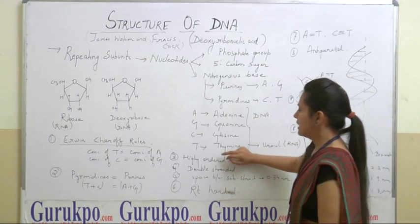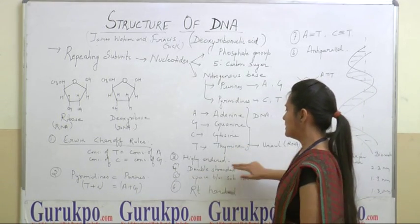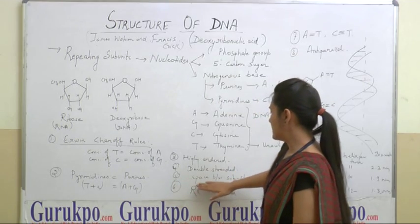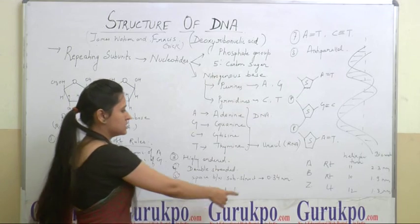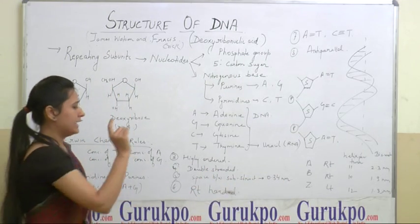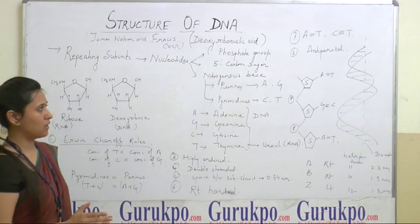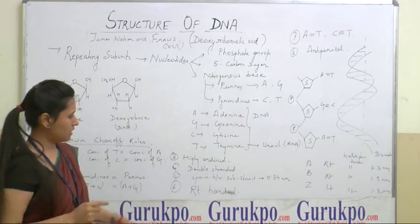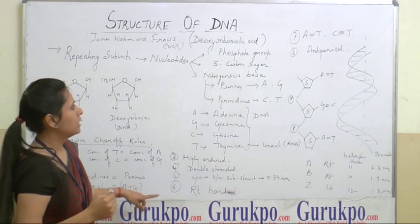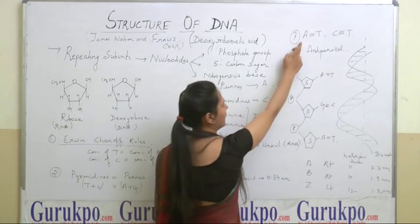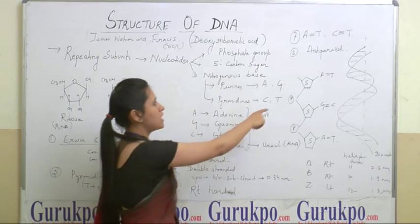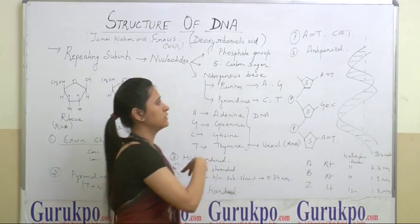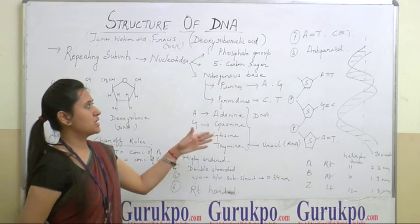DNA is a highly ordered structure. It is double-stranded, that's why we call it a double-stranded helical structure. The space between the sub-structures is 0.34 nanometres. It is a right-handed structure because it spirals along the imaginary axis in the clockwise direction. Adenine will combine with thymine forming a double bond, whereas cytosine will combine with guanine forming a triple bond, so this bond is stronger than the double bond.